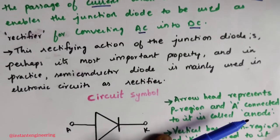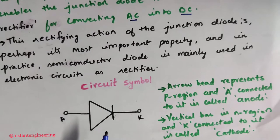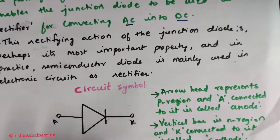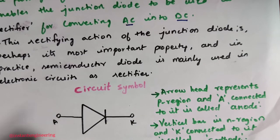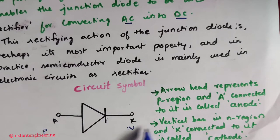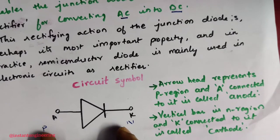The symbol of the diode is like a triangle. The arrowhead represents the P region and is connected to the anode. This head of the arrow is the P region, and this is the N region. The letter A is called the anode. The vertical bar is the N region, and K connected to it is called the cathode. So this is anode and this is cathode — the basic symbol of a diode.